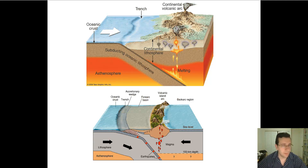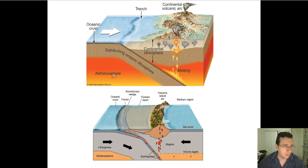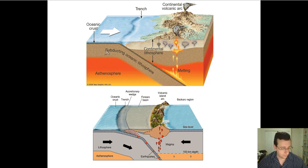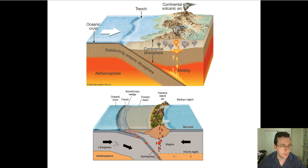They also have convergent boundaries. Convergent boundaries happen whenever two plates collide against each other. You see two of these events happening here: a subducting oceanic plate going underneath the continental plate, and also a subducting oceanic plate going underneath another oceanic plate.